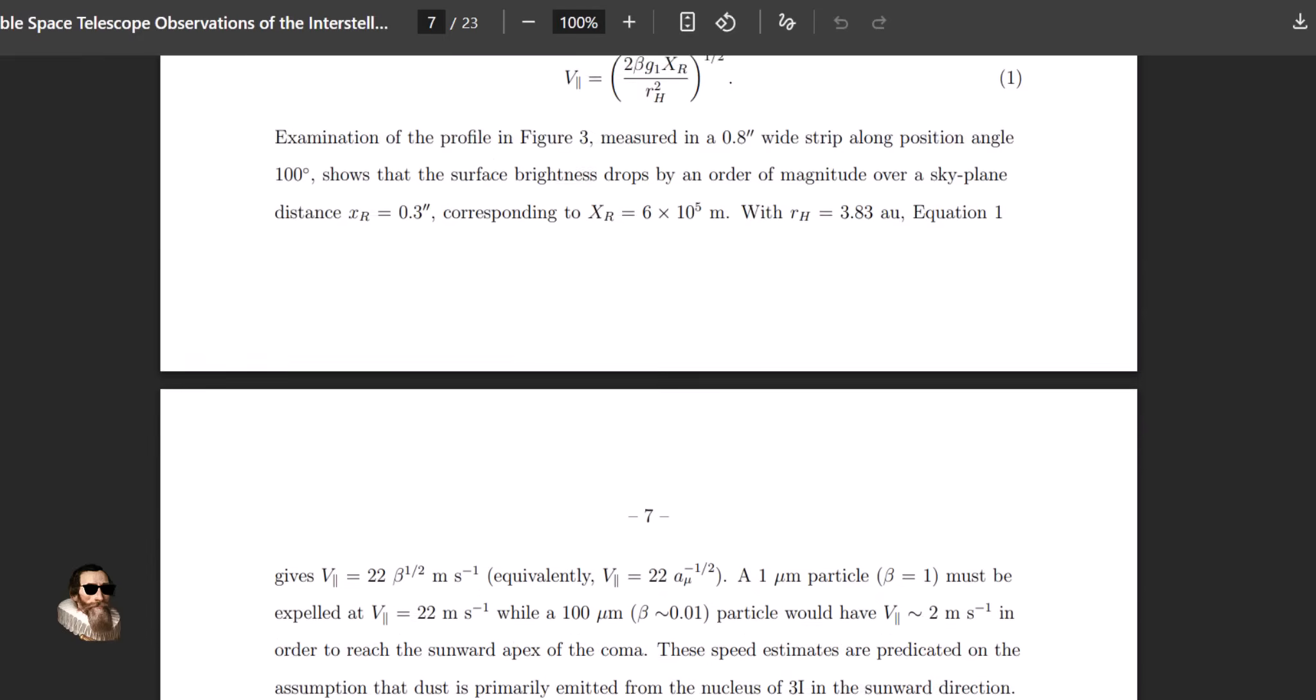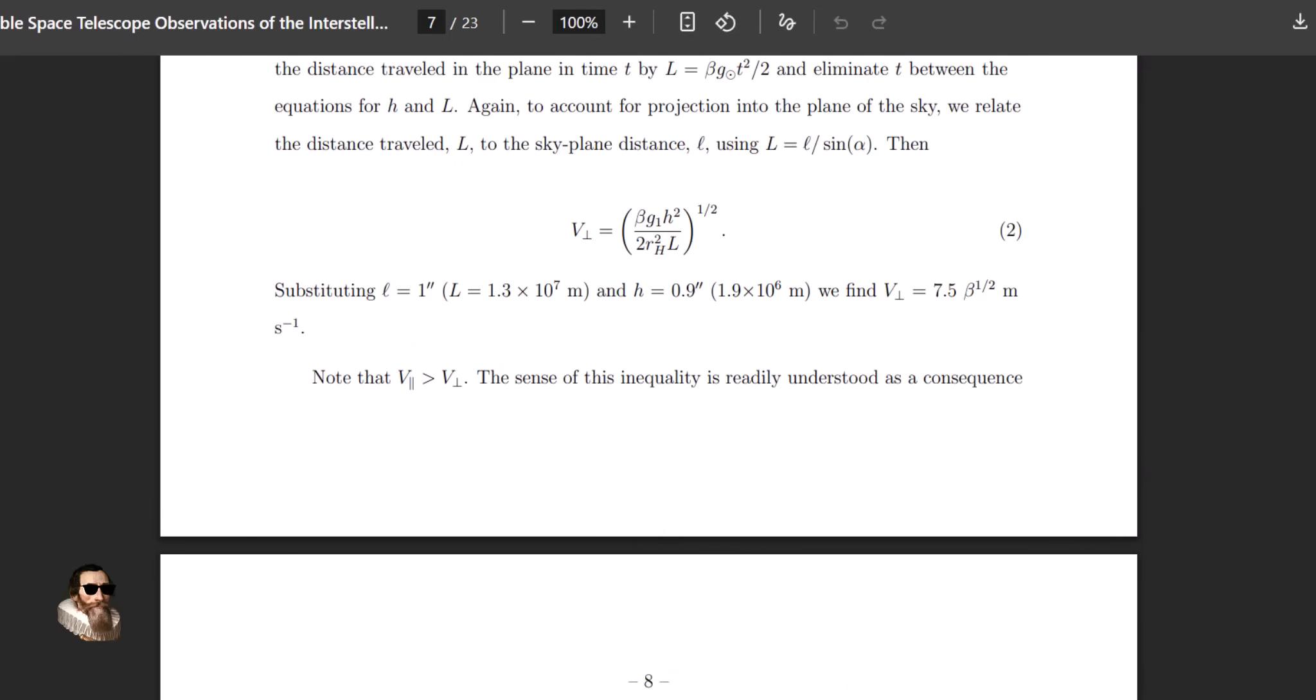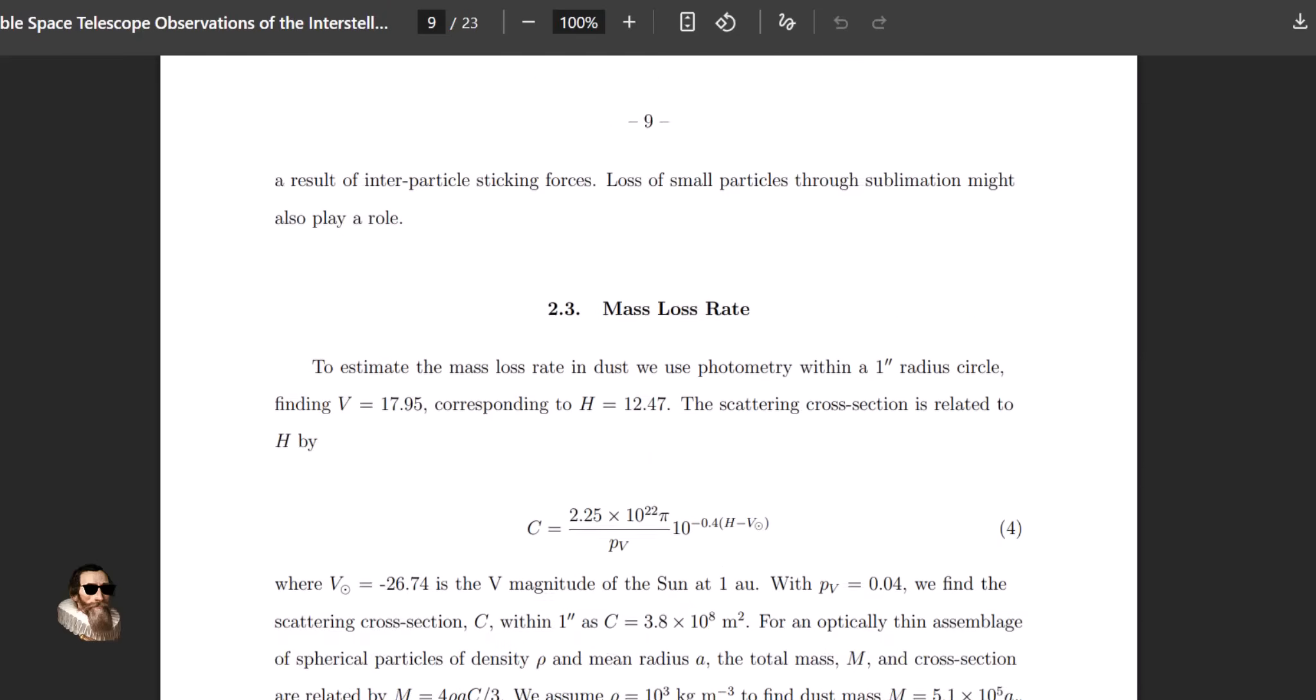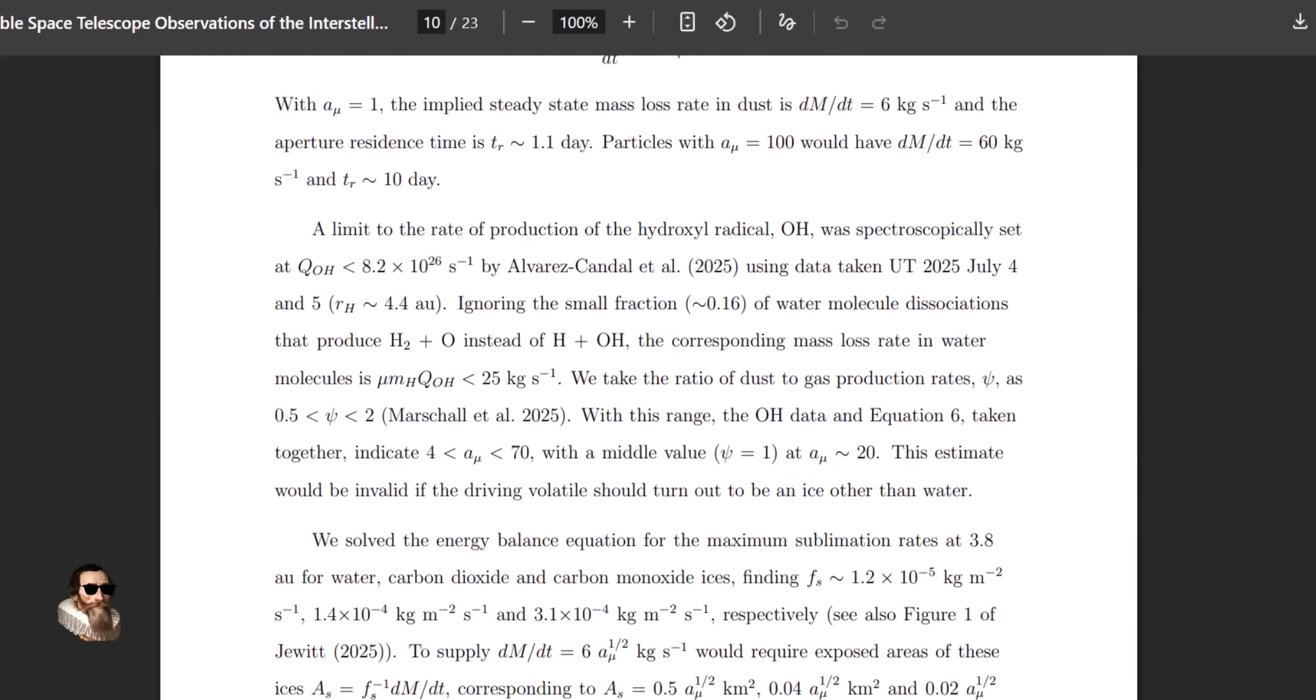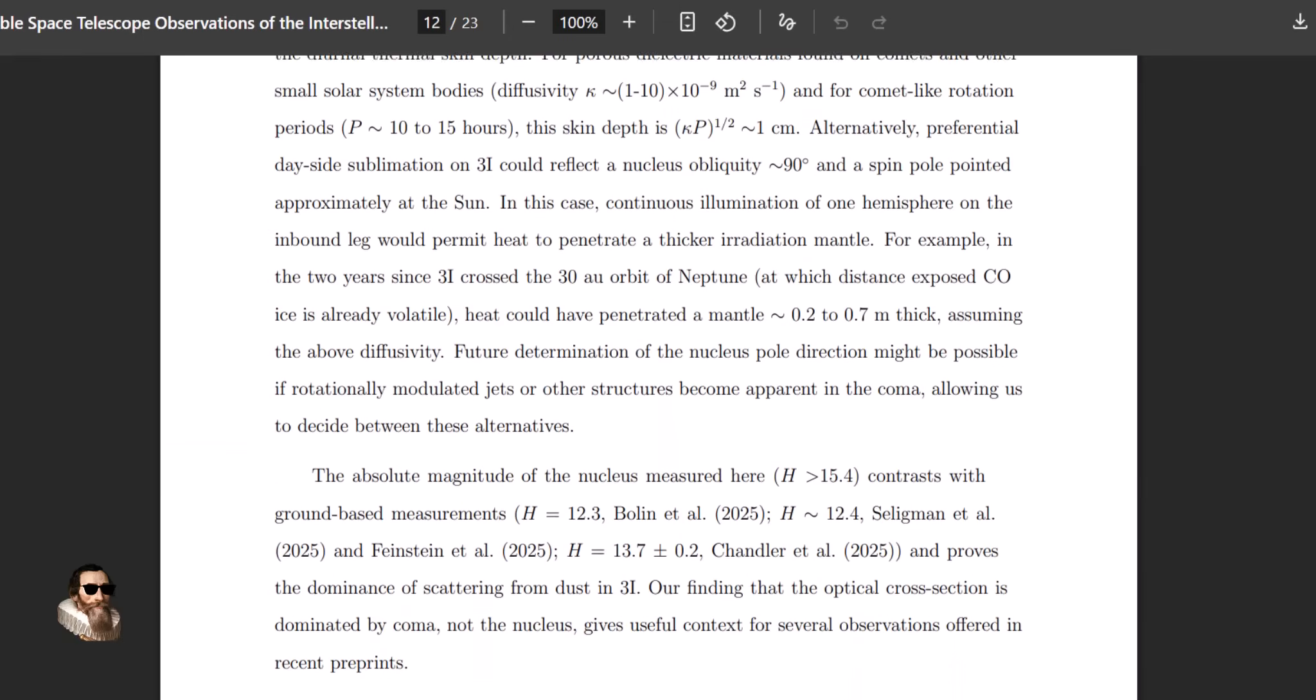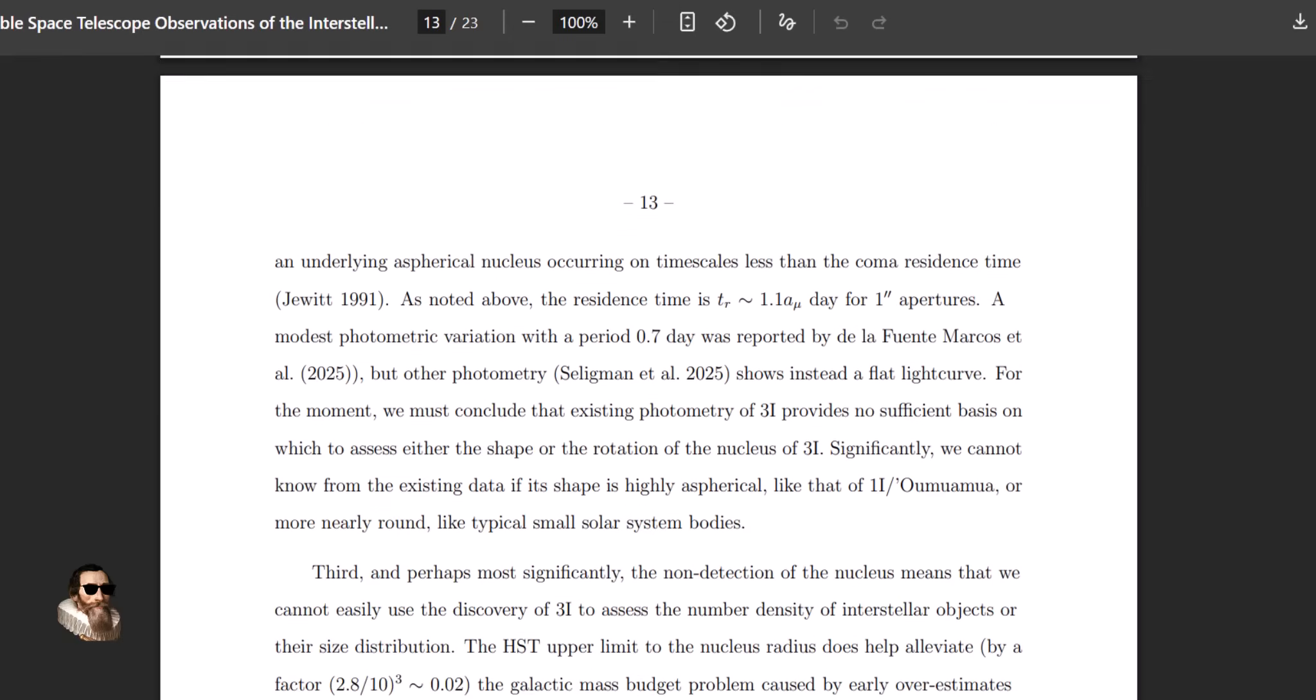The steep brightness profile around 3i Atlas implies that the nucleus dominates the observed light. This must hold irrespective of the origin of light—in other words, the nucleus dominates over the emission from the glow around it.